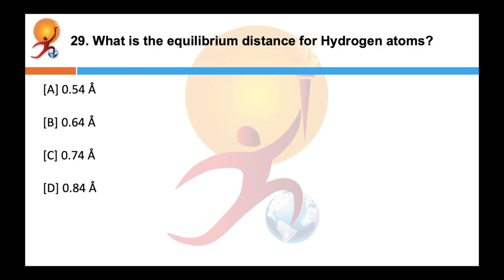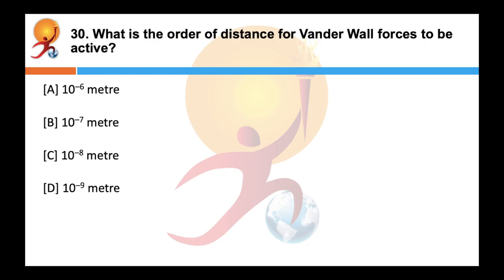What is the equilibrium distance for hydrogen atoms? Correct answer is C — 0.74 Angstroms. When the inter-atomic force between two atoms is zero, the distance between them is called the normal or equilibrium distance. What is the order of distance for van der Waals forces to be active? Correct answer is 10⁻⁹ meters. Inter-molecular forces — called van der Waals forces — are quite weak compared to inter-atomic forces, electrical in nature, and active when separation between molecules is of the order of 10⁻⁹ meters.